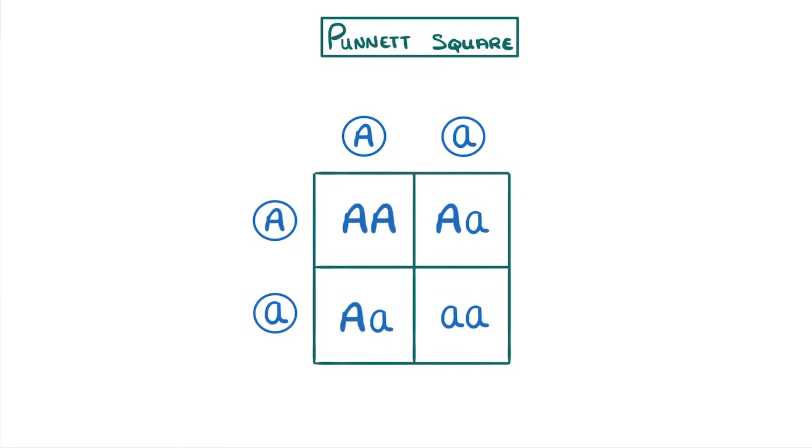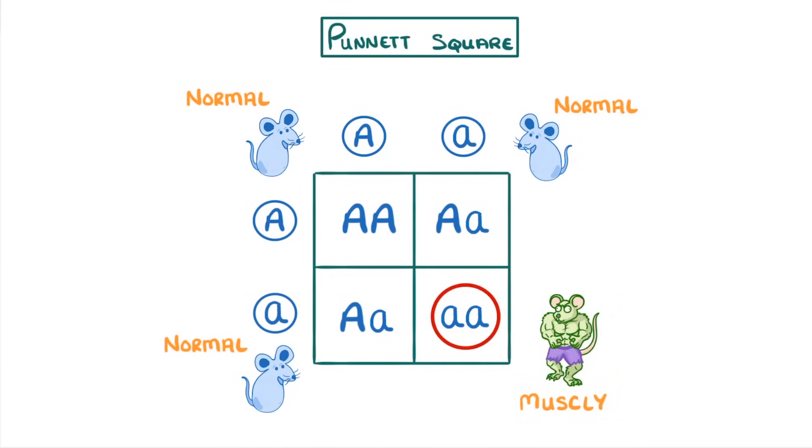So in terms of the phenotypes, we would have three that are normal because they all have a dominant allele that's being expressed, and then because of our homozygous recessive male, we'd have one muscular offspring.